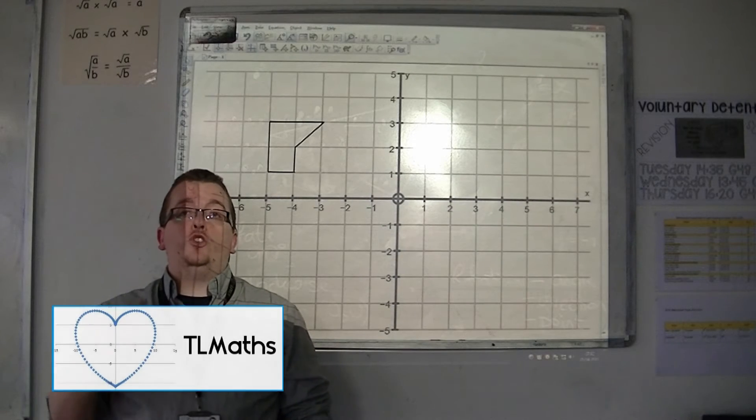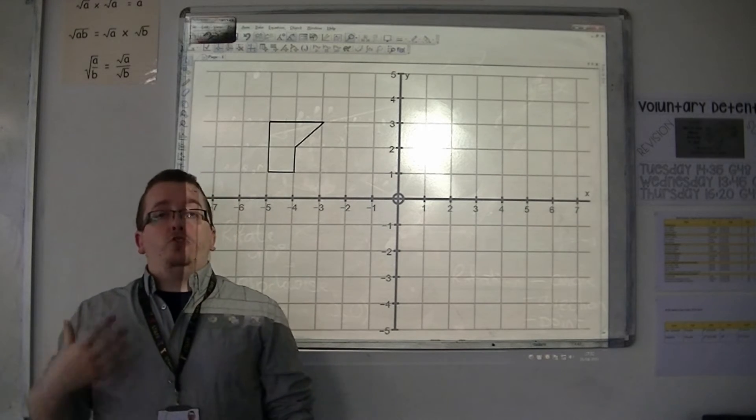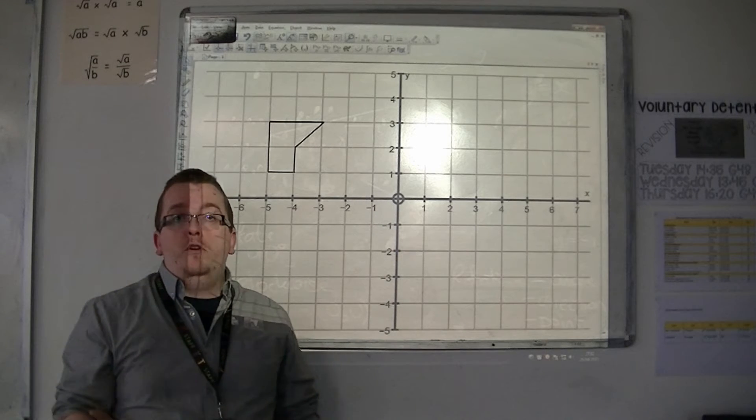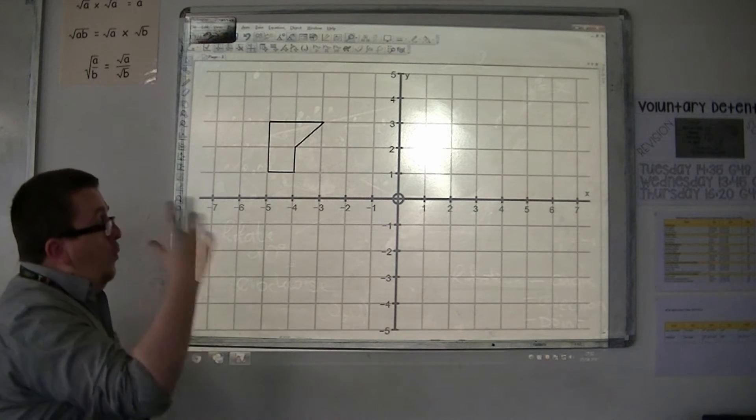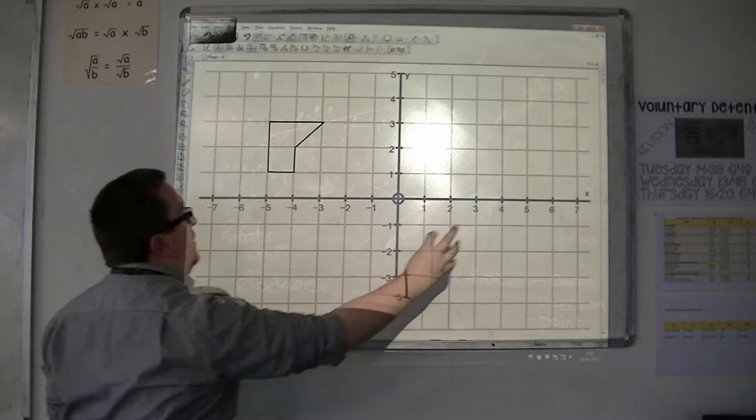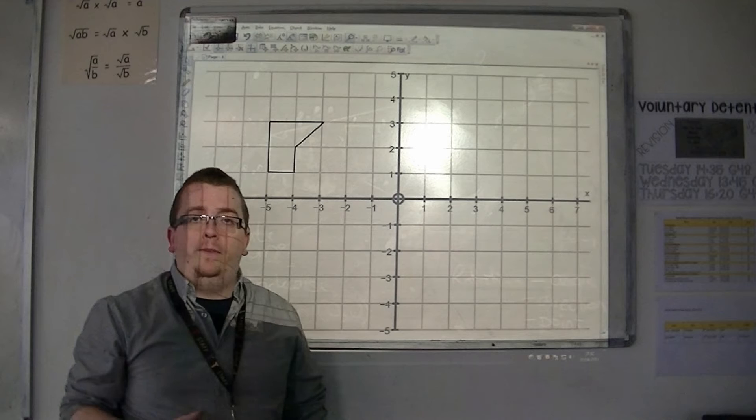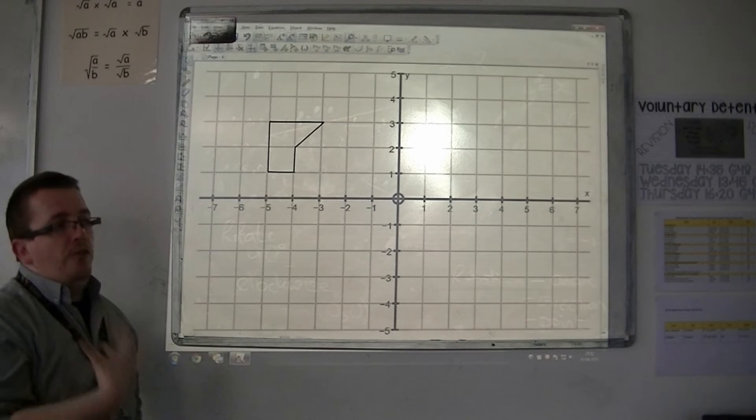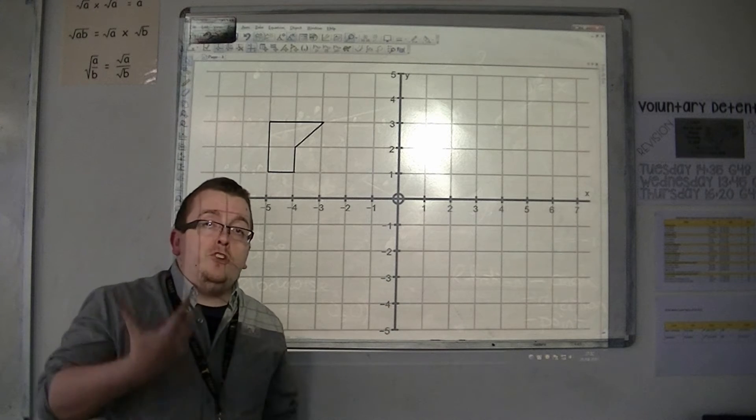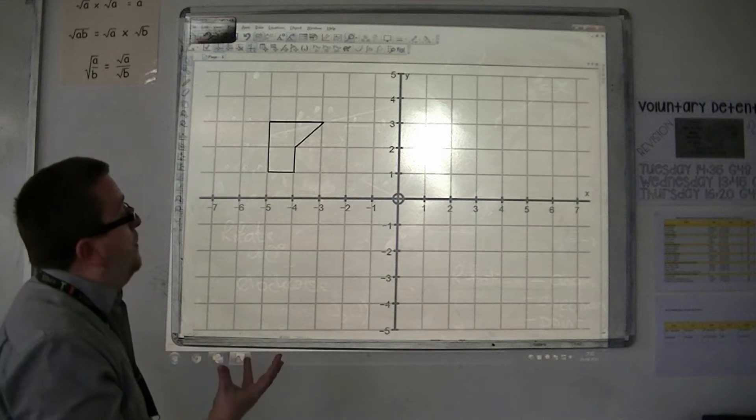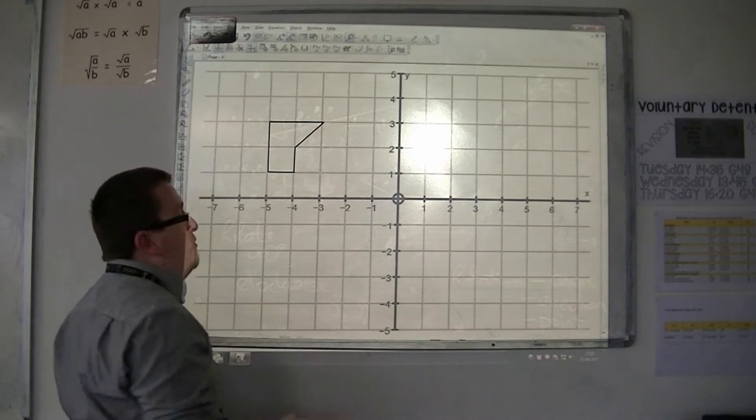In this video we're going to be looking at translations. Translations is a fancy mathematical word to mean moving. So all I'm going to be doing is picking up this shape and moving it somewhere else on the grid. There is no rotation in it, there's no reflection, there's no enlargement. The shape should not change. So all that has happened is that it has moved somewhere else.